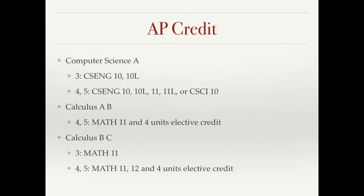We do accept AP classes for credit. If you take Computer Science A and get a three, then the computer science and engineering school will give you credit for their first programming class, CS10 in the lab. And if you get a four or a five, you would get credit in the engineering school and you'd also get credit for our beginning class, CS10. If you take the Calculus AB exam and get a four or a five, you get credit for the first quarter of calculus, which is Math 11, and then four units of elective credit. Whereas if you take Calculus BC and get a three, you'd get credit for Math 11. If you earn a four or a five, you'll get credit for our first two quarters of calculus, Math 11 and 12, and then four units of elective credit. We expect these to remain unchanged, even though the AP exams will be covering a subset of the complete material because of the school shutdowns.